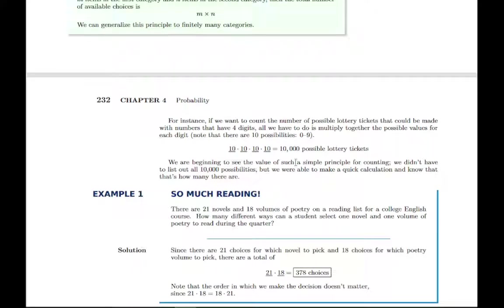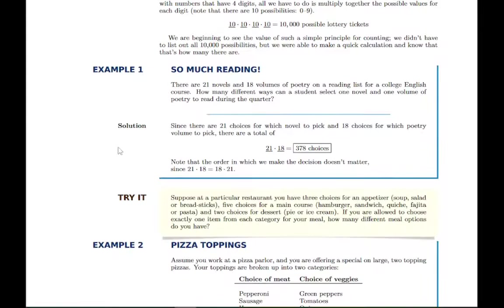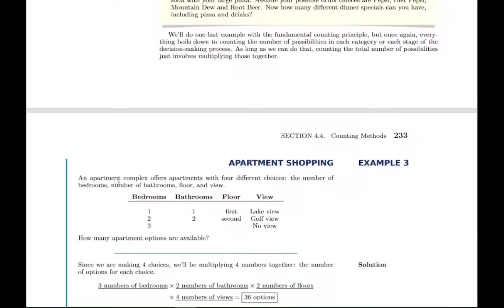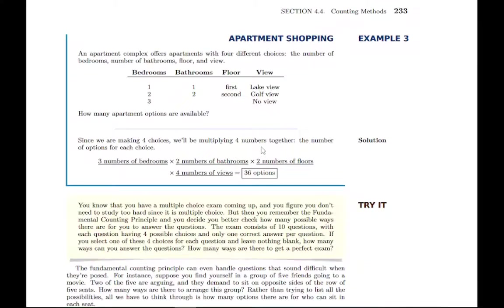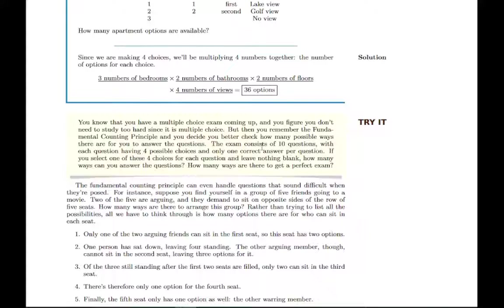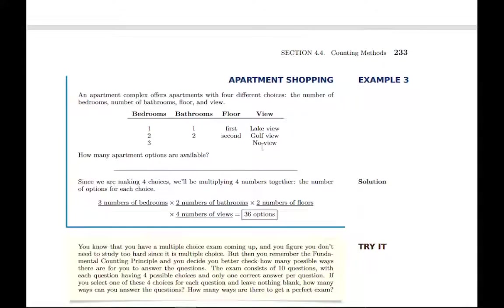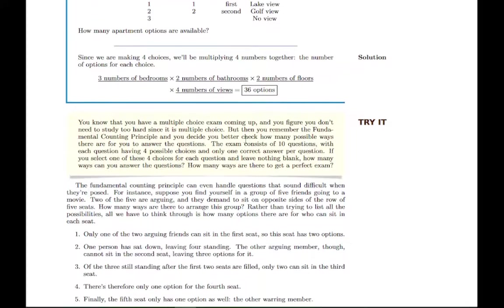So there's an example with lottery tickets, for instance, and then these first several examples go through just different iterations of that same principle that you can think about making decisions like this and how many options you have for each decision. You can multiply them together. So the fundamental counting principle says you just multiply the number of options each time.